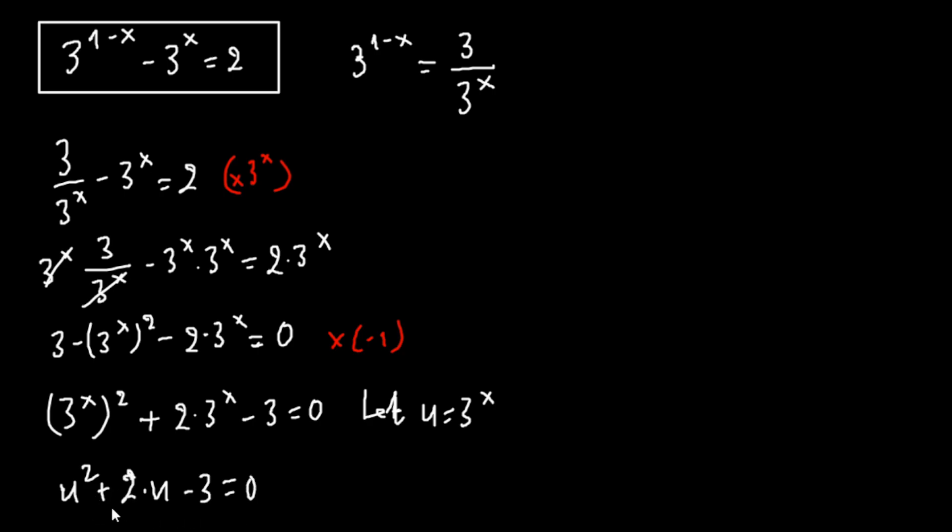Here it is easy to find the solutions. You can see that the solutions are 1 and minus 3, so this can be written as u minus 1 times u plus 3 equals 0.